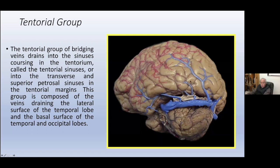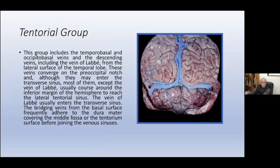Here we have two veins of Labbé — one in the anterior third of the temporal lobe and one in the posterior tier. This is uncommon. Rotten described in 20 hemispheres only two veins of Labbé found in this site; the most common location is the median tier of the temporal lobe. The tentorial group includes temporal basal and occipital basal veins and descending veins including the vein of Labbé. These veins converge on the preoccipital notch and may enter the transverse sinus.